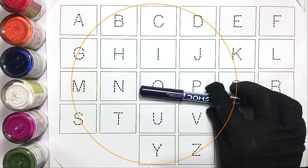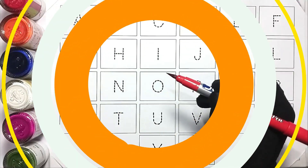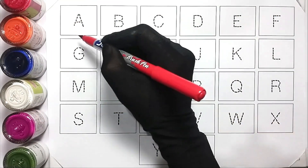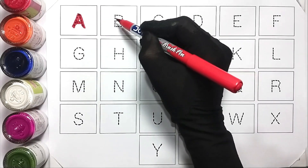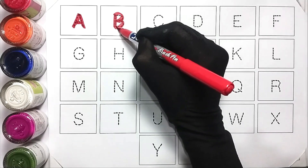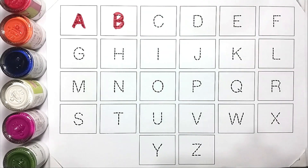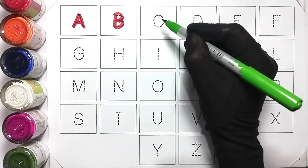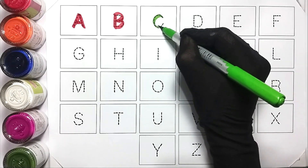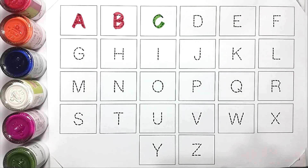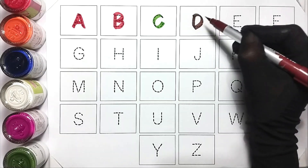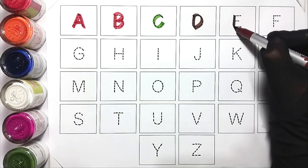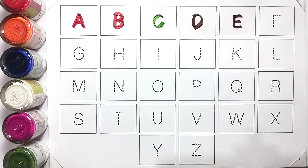So kids, let's start the video. Red color. A, A for apple. B, B for boy. Light green color. C, C for candle. Brown color. D, D for dolphin. E, E for elephant. Blue color.